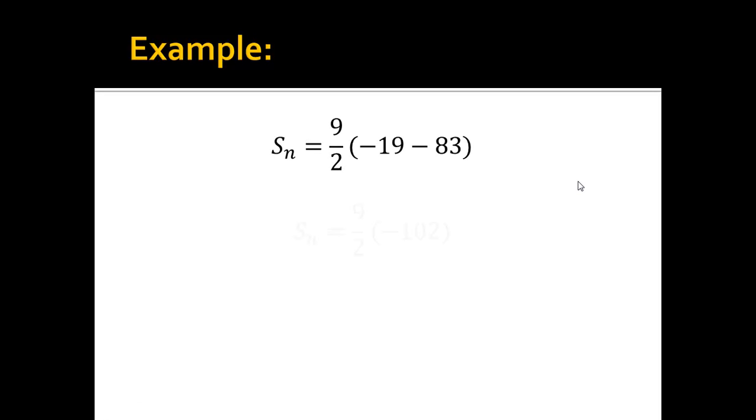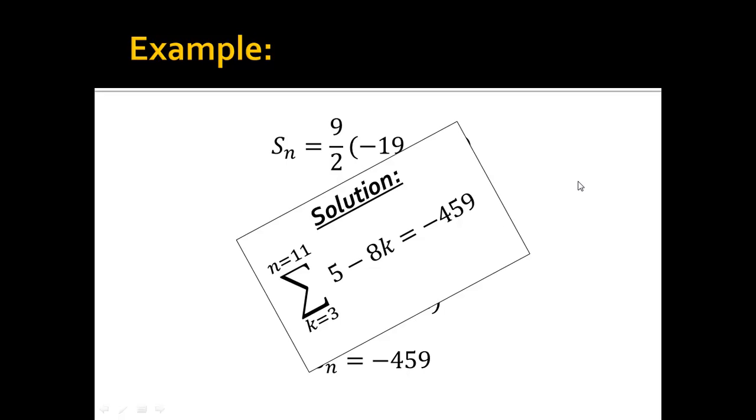So, now I plug all this in. And, I just go ahead and do what I've done before. I come up with negative 459. Which means, if I were to sum up from the third to the 11th term of that sequence, I would get negative 459.